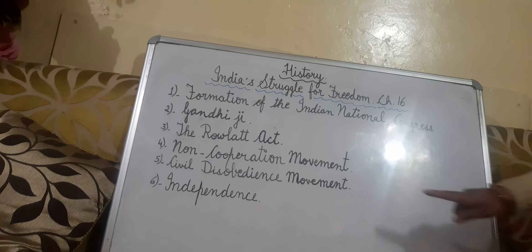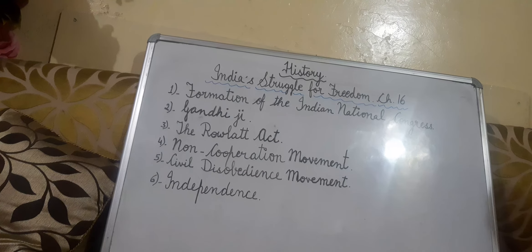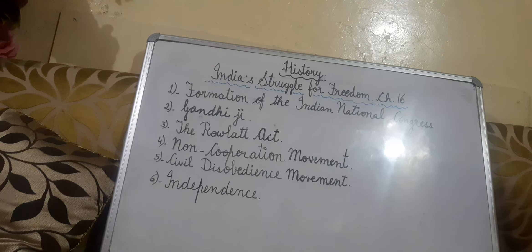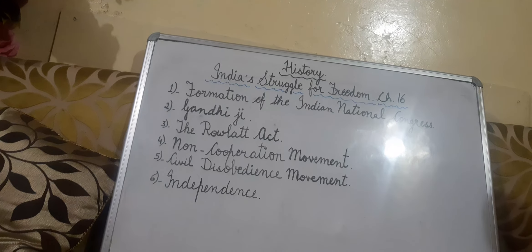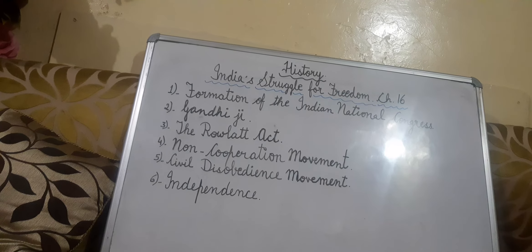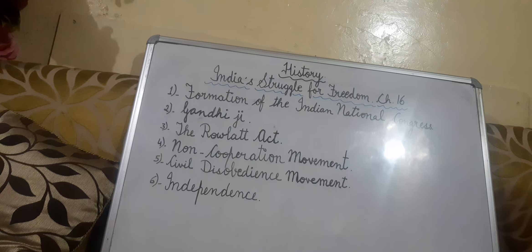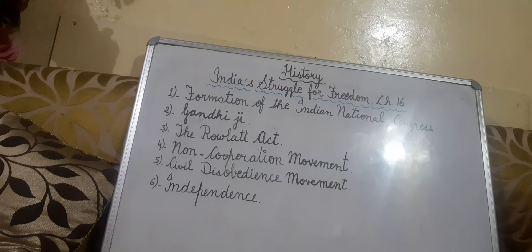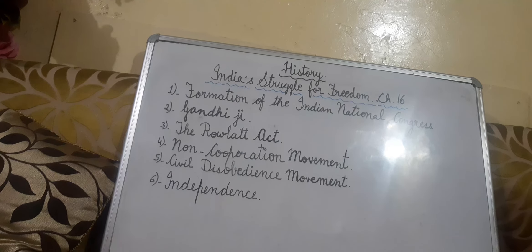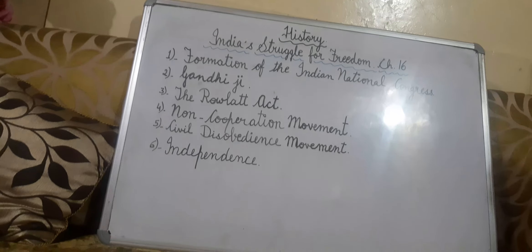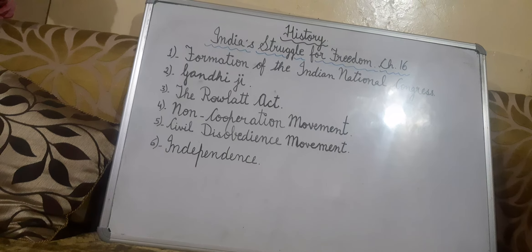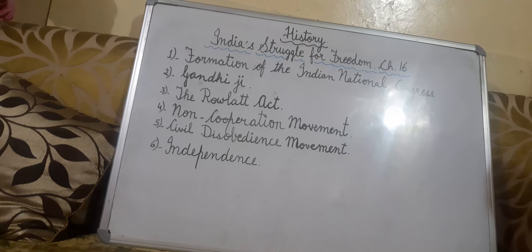Now the last point — independence. The British government reacted to the Civil Disobedience Movement by arresting many leaders. Thousands were put in jail and Gandhiji called off the movement. When the Second World War broke out, the Congress made it clear that India would not join the war on behalf of the British unless it was given independence.